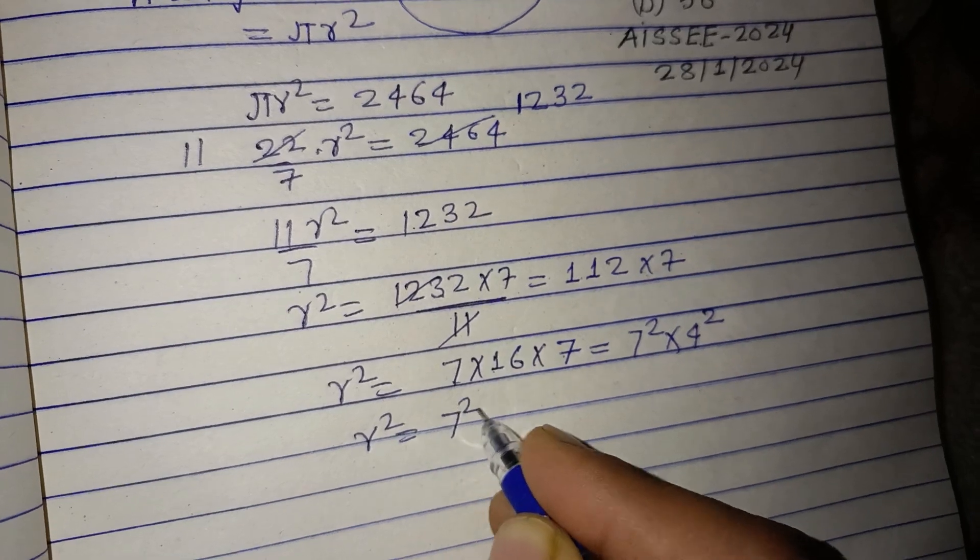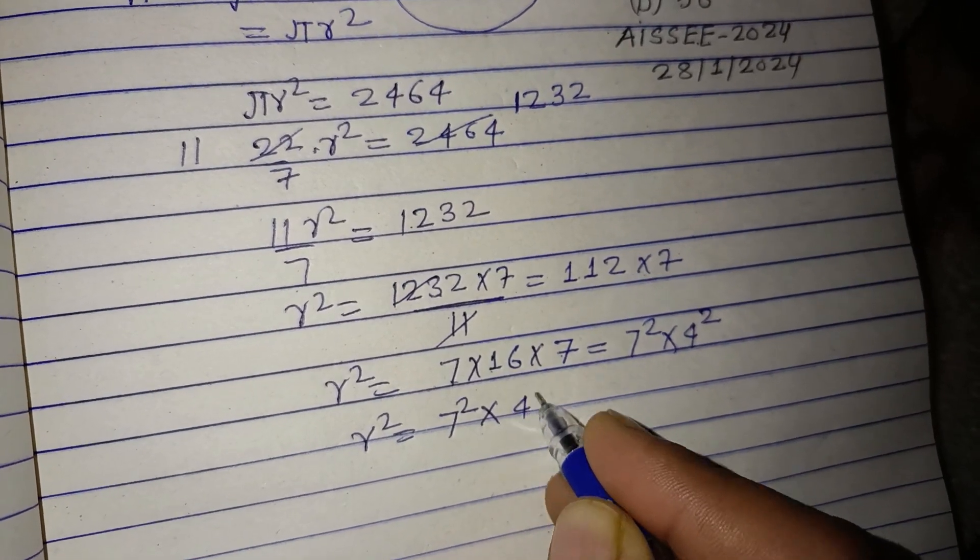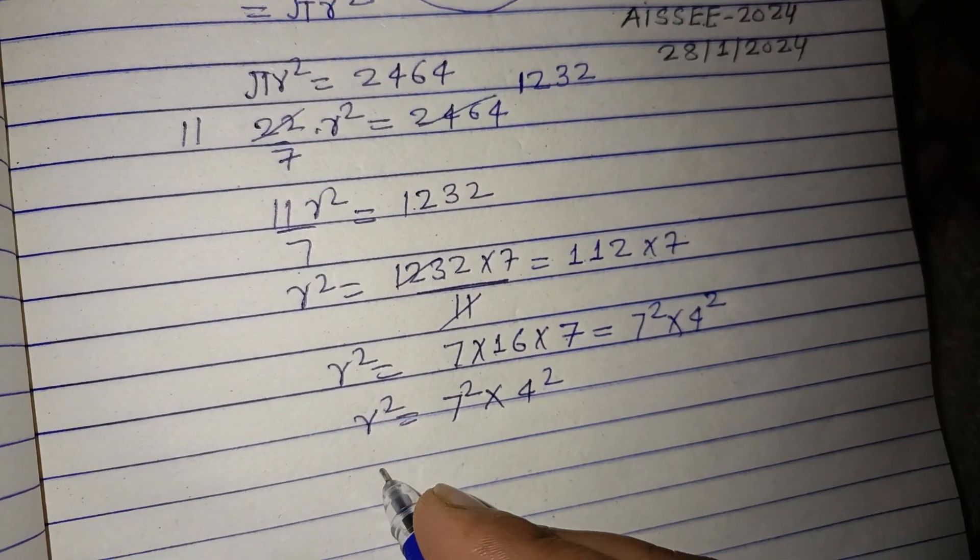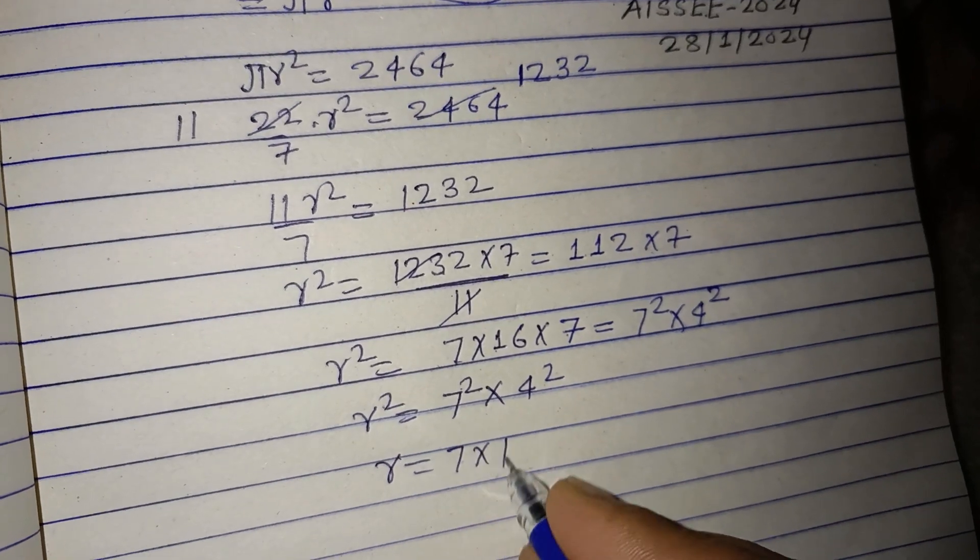Square and square are cancelled. r equals 7 into 4, that is 28 centimeter. So r is 28 centimeter.